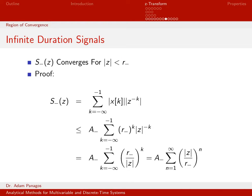Recall that S minus is the sum from minus infinity to negative 1 of the magnitude of X of K times the magnitude of Z to the minus K. From the first line to the second, I use the assumption that we found A minus and R minus such that A minus times R minus to the K is always greater than the magnitude of X of K — replacing X of K with a larger quantity to obtain the inequality.